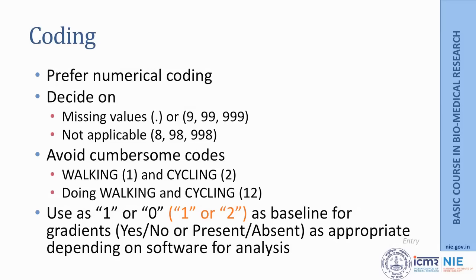An important aspect of data entry is coding. It is always preferable to have numerical coding. With reference to this session, we are talking about quantitative data analysis, so numerical coding is preferred. In particular, you need to decide how you will code missing values — it could be a dot or, depending on the field, you may choose to enter 999999. Be careful that the missing value code for age is not 99, as that can mean differently. If a value is not applicable, enter it consistently with a particular coding in the data collection instrument.